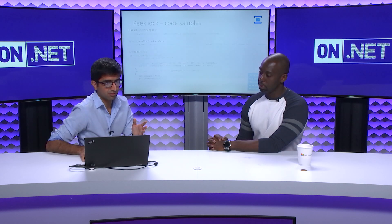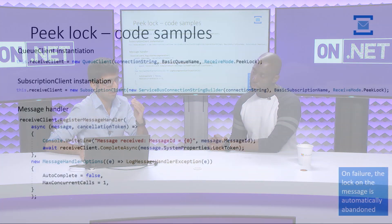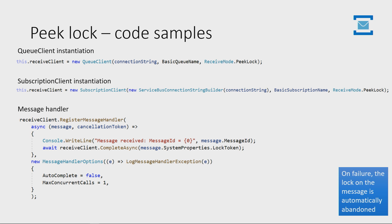Here's a quick look at what the code looks like. We have the queue client and the subscription client — we call both of these receive clients. Since they have different API contracts, they're different classes. The way it works is that we register a message handler. This is one way of registering a receiver — it's pseudo push semantics, wherein you're not explicitly calling receive, but the SDK is doing it behind the scenes for you.